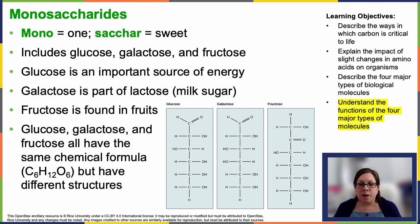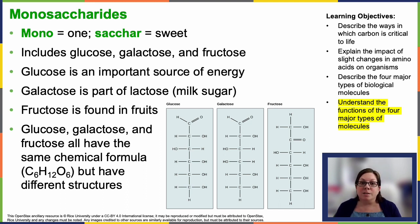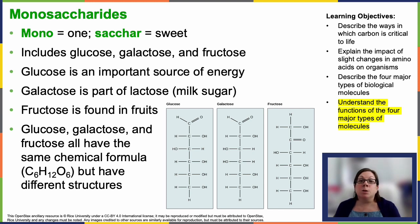Lactose is a disaccharide found in cow's milk and milk in general. Lots of people are lactose intolerant, meaning they lack the enzyme necessary to break lactose into its two monosaccharides. Lactase breaks galactose away from the other sugar it's bonded to. All three monosaccharides — glucose, fructose, and galactose — happen to have the same chemical formula: C6H12O6, meaning six carbons, 12 hydrogens, and six oxygens. However, if you look at the picture, all three are structured a little bit differently, which allows them to bond differently to each other.